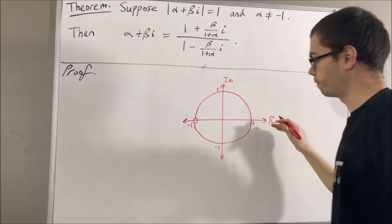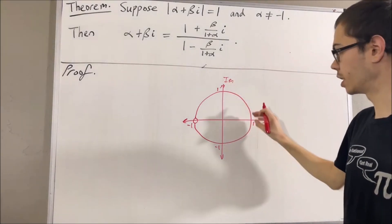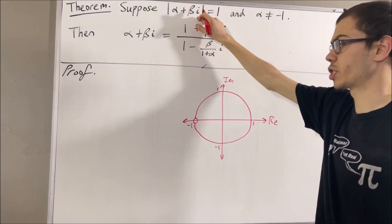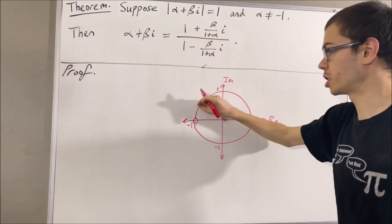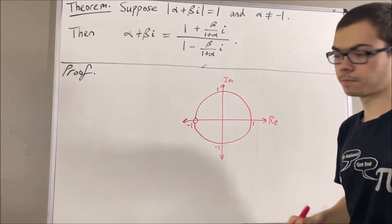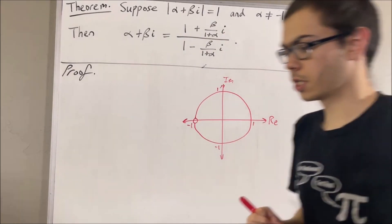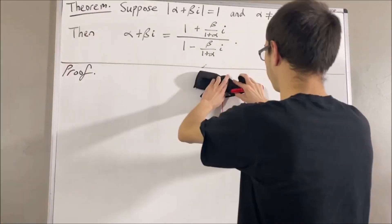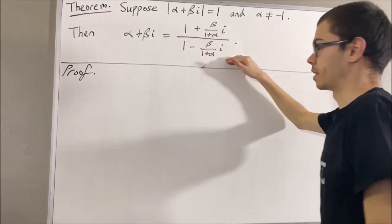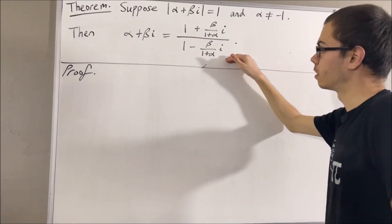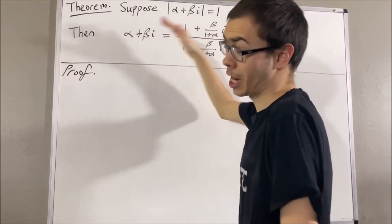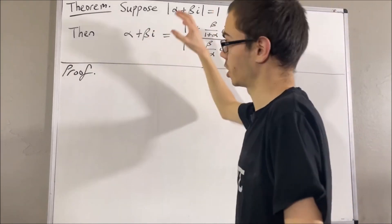So, if we visualize the complex plane and consider the unit circle, alpha plus beta i is just a complex number somewhere on the circle, but not at negative 1. So that's just to visualize it. Now, to show that these two expressions are equal, all we have to do is establish a chain of equalities showing that they're equal.